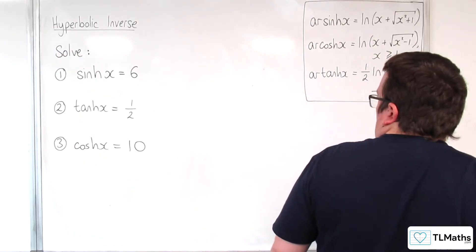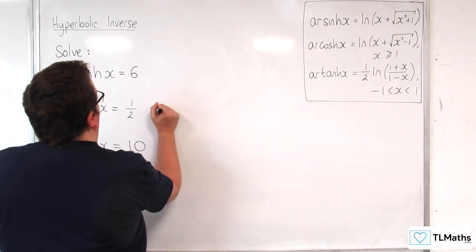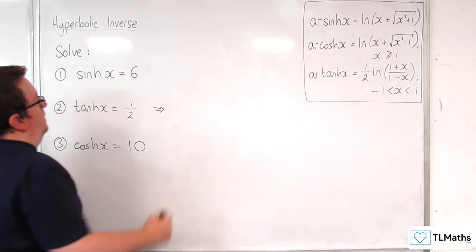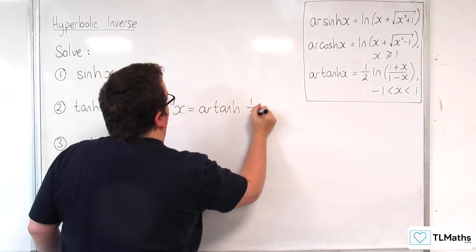So, let's take a look at the second one. Tanh of x is equal to 1 half. So, that means that x is equal to artanh of 1 half.